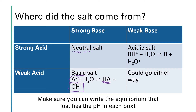If we have a strong acid reacting with a weak base, we end up with an acidic salt. The conjugate acid of the weak base doesn't want to hold on to that proton, so it transfers the proton to a water molecule to recreate the original weak base and hydronium ions. The presence of those hydronium ions makes the solution acidic. If we have a weak acid reacting with a weak base, the pH could go either way depending on the relative strengths. For this class, we'll focus on neutral, acidic, or basic salts and ignore the weak acid–weak base case.